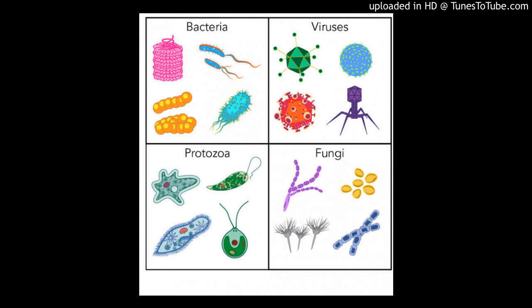Some bacteria make their own food through photosynthesis and others live on dead matter or on living things as parasites. Children, protozoa are tiny single-celled organisms. They come in many different shapes and sizes. They are seen under the microscope. They are bigger than bacteria. They cause diseases like malaria and dysentery.